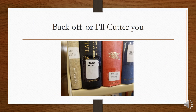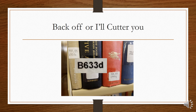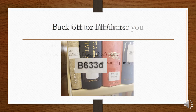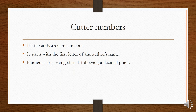You may have already noticed that there's a second set of letters and numbers on the books after the Dewey number. So what is that? That's what's called a cutter number, named after the man who invented it, Charles Ami Cutter.